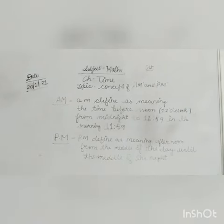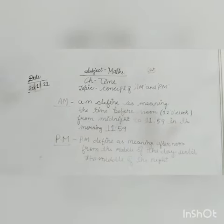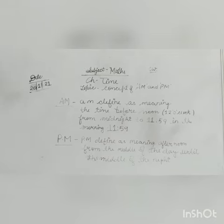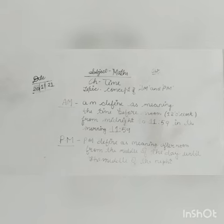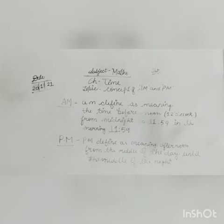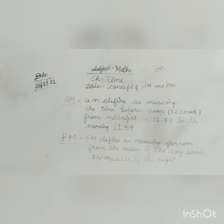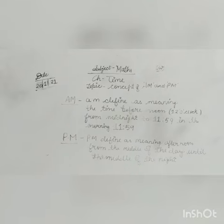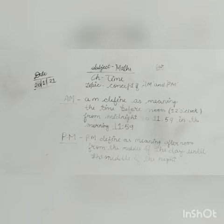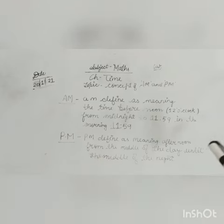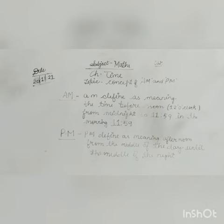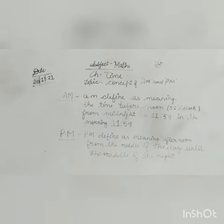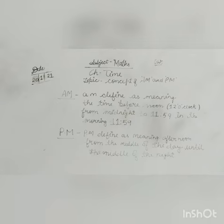Midnight se din ki 11:59 tak aapka AM time chalta hai. That means agar aap morning ka time likh rahe hain — like 9:37 aapko likhna hai — toh uske aage aap AM lagayenge, PM nahi. Because PM is the concept of after afternoon. So the concept of PM: PM is defined as meaning afternoon. PM kisko define karta hai — afternoon ko. That means 12 baje ke baad jo time hota hai.